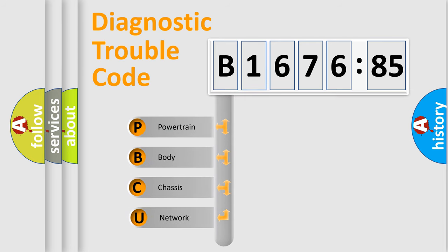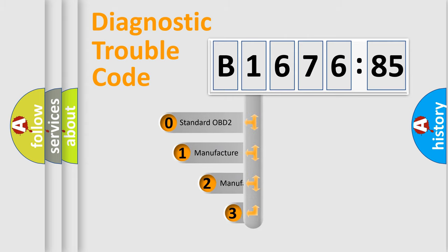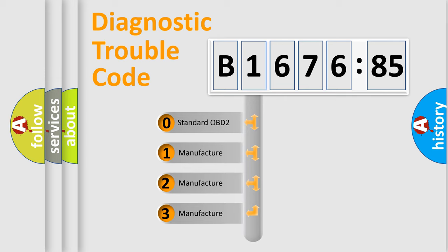First, let's look at the history of diagnostic fault code composition according to the OBD2 protocol, which is unified for all automakers since 2000. We divide the electric system of an automobile into four basic units: Powertrain, Body, Chassis, and Network. This distribution is defined in the first character code.